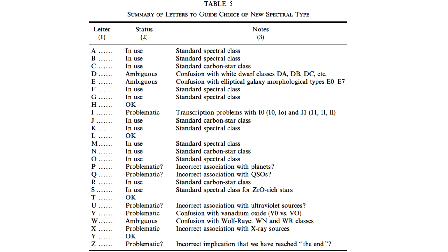So how about some of those other letters? C got reused for carbon stars. Carbon stars also had R and N-class for a while, but those got absorbed into C — they became C-R and C-N. There are S-type stars, which contain zirconium, and then you have things like D for dwarfs. So not all of the letters were available.